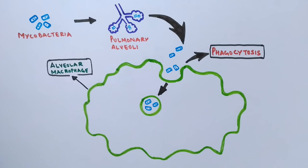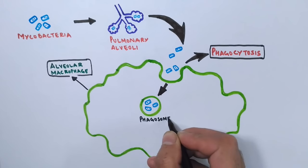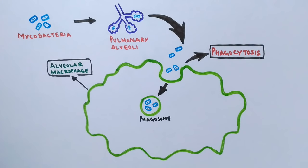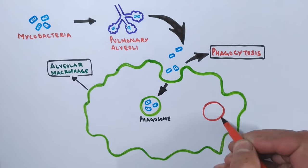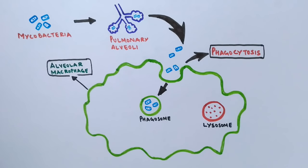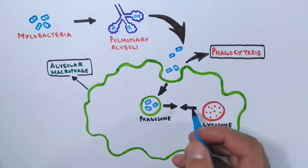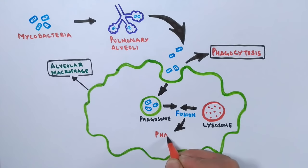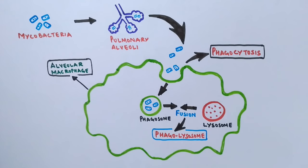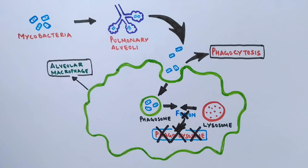The vesicle which now encapsulates the Mycobacterium tuberculosis is termed a phagosome. To eradicate the pathogen, macrophages have lysosomes with hydrolytic enzymes. Under a normal immune response, the lysosome fuses with the phagosome to form a phagolysosome, in which the pathogen is dissolved with acids and finally gets eliminated.